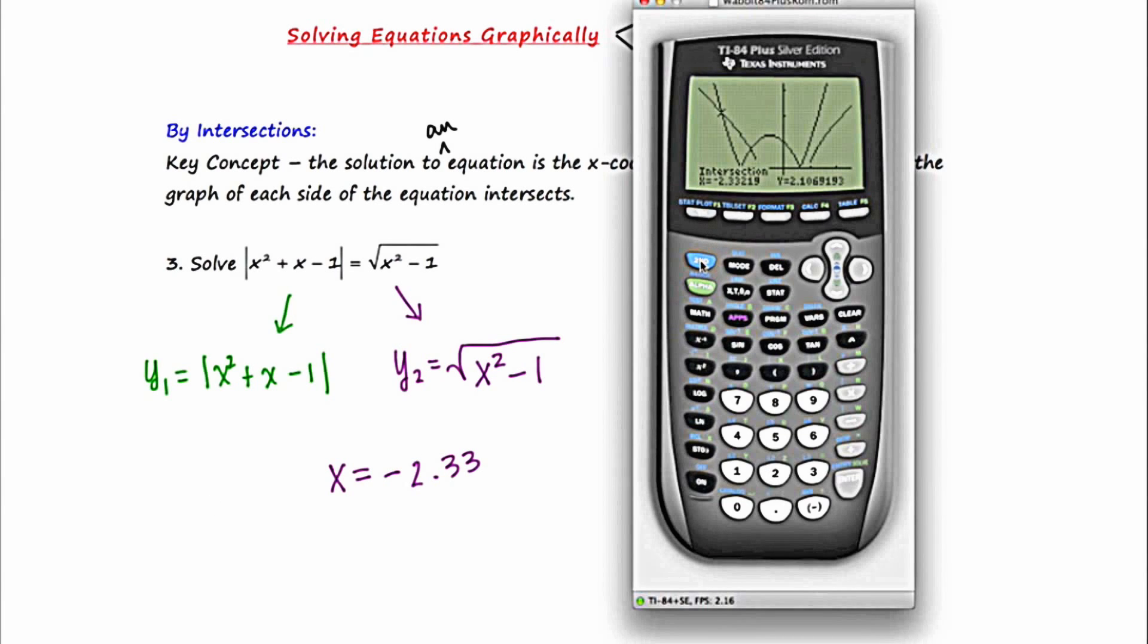Now let's go to the second intersection, which is the one that's closer on the right. Second trace five again, let's move to the other side, right there. Enter, enter, enter.